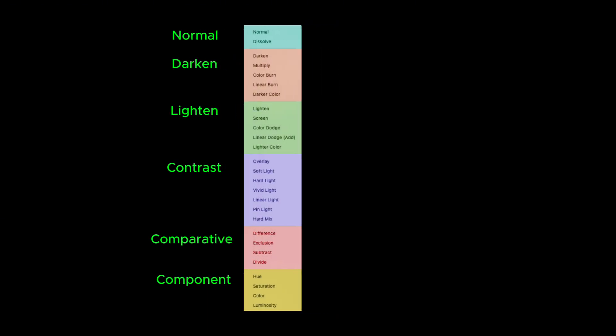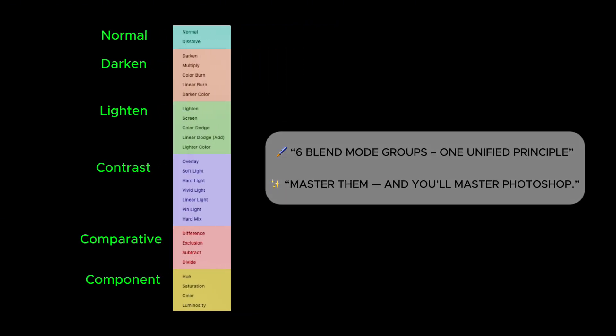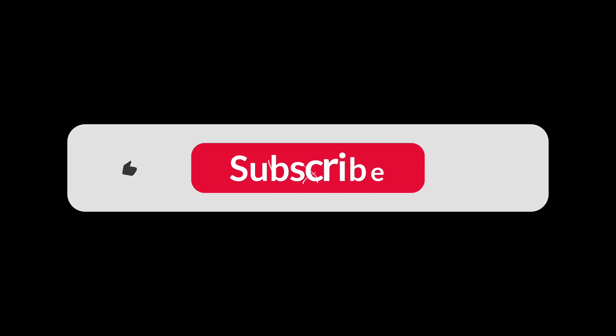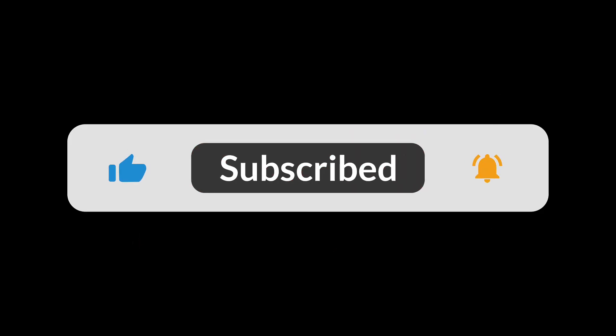And that's all six blend mode groups in Photoshop. Once you understand how each group behaves, you can combine them freely – from color grading and creative blending to advanced retouching. Don't forget to like and subscribe to watch more Photoshop tutorials together.